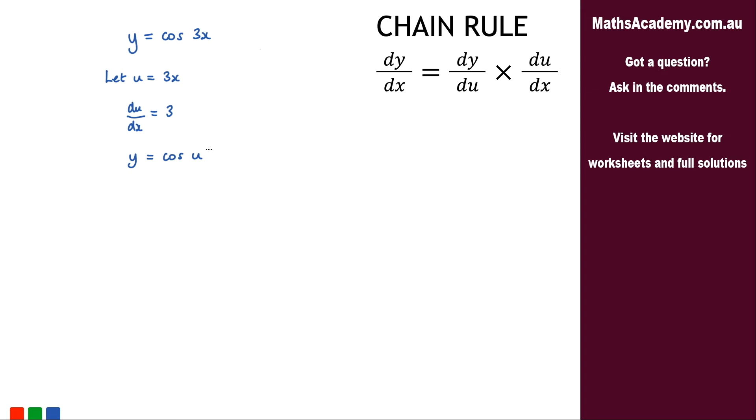The next step is to differentiate this. So dy by du equals, when you differentiate cosine you get negative sine. So we've got negative sine u.